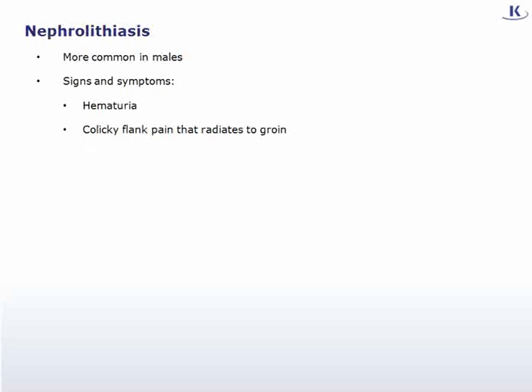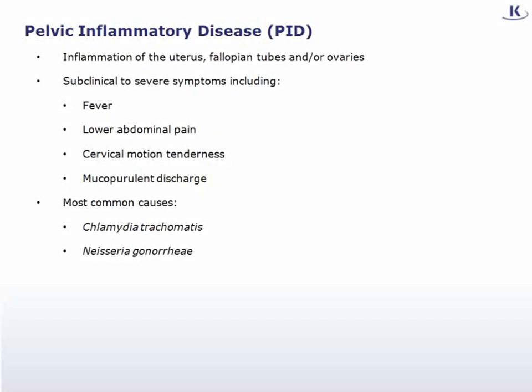Nephrolithiasis is more common in males and presents with hematuria and colicky flank pain that radiates to the groin; these symptoms are not found in this patient. Pelvic inflammatory disease (PID) is inflammation of the uterus, fallopian tubes, and/or ovaries, with signs and symptoms including fever, lower abdominal pain, cervical motion tenderness, and mucopurulent discharge. The most common causes of PID are Chlamydia trachomatis and Neisseria gonorrhea. This patient has a history of PID, however her current presentation includes amenorrhea and vaginal bleeding without discharge, and a positive beta-HCG — pointing to ectopic pregnancy rather than PID.